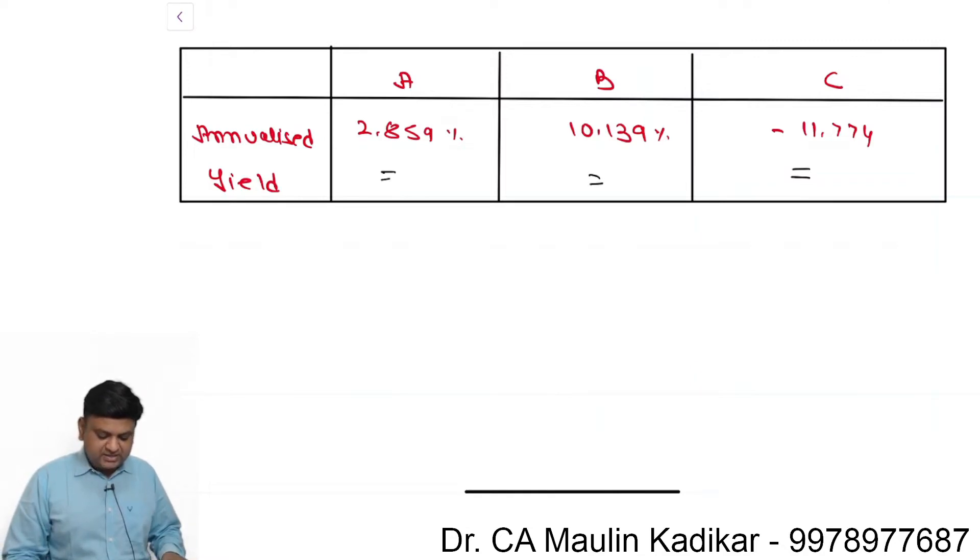B is the mutual fund which is able to give good returns, and if it is likely that the same return will be offered in the future, then in that case we should shift our investment of A and C into B. This is the general comment we can make.